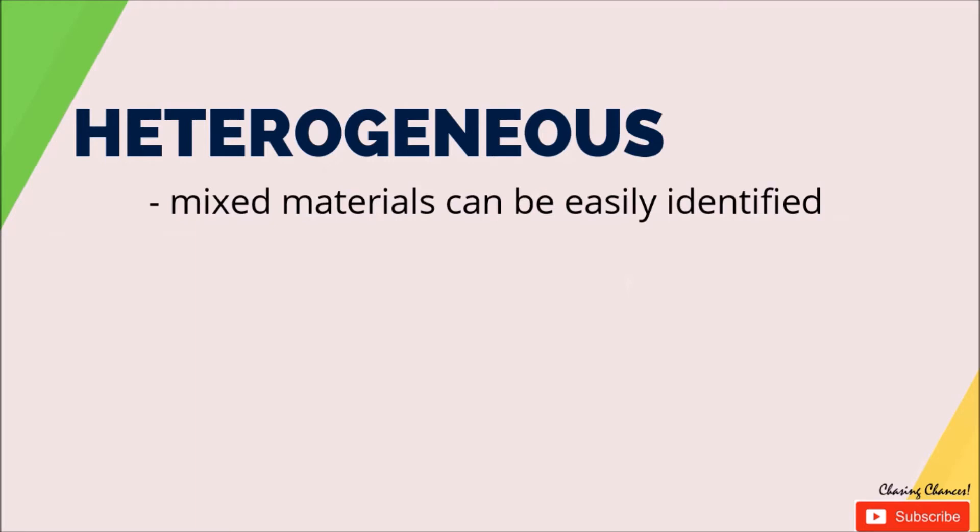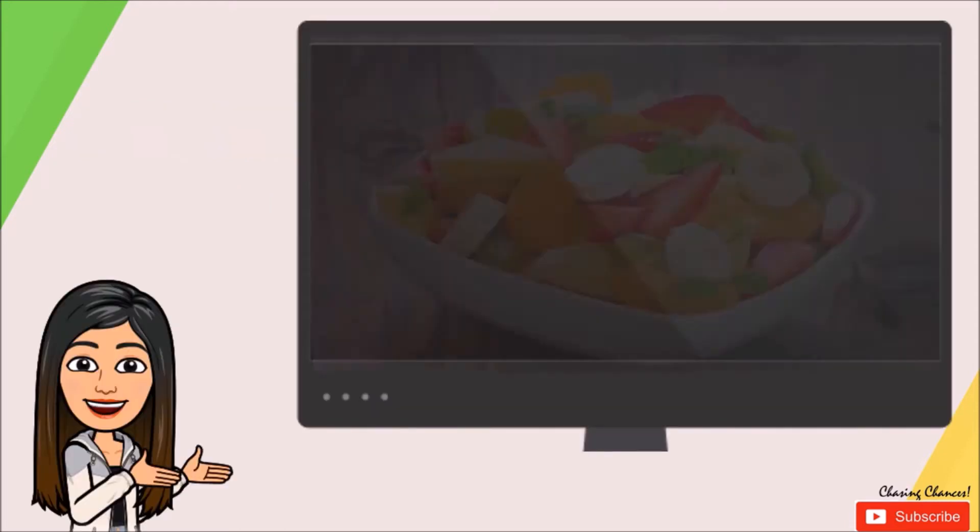This means that you can recognize, tell or name the component materials in that mixture. Let's take a look at some examples. Look at this fruit salad in our slide. This is an example of a heterogeneous mixture because we can say that in this dish there is banana, strawberry, orange, grapes and apples.